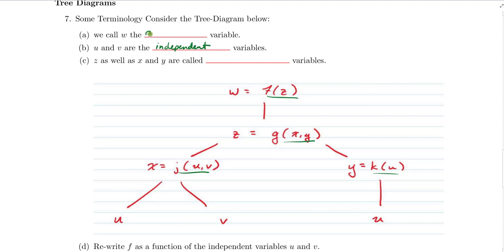And in this case, w is the single dependent variable. We would then call this variable right here, z, an intermediate variable, as would be x and y. So these are called our intermediate variables. And the interesting thing about the intermediate variables is sometimes they play the role of a dependent variable, and sometimes they play the role of an independent variable.